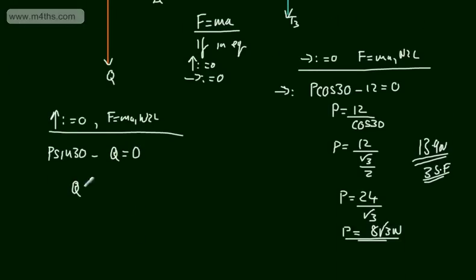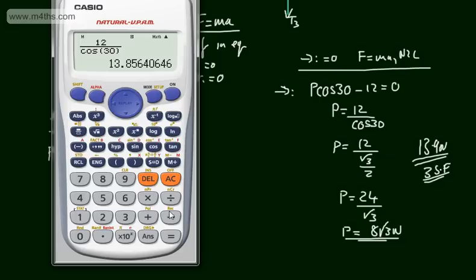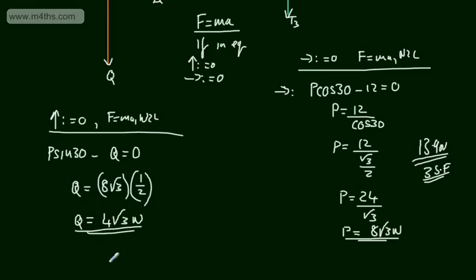So Q is equal to P sin 30. P is 8 root 3, and sin 30 is 1/2, so Q equals 4 root 3 Newtons. Dividing the previous answer by 2 gives approximately 6.93 Newtons, correct to three significant figures.